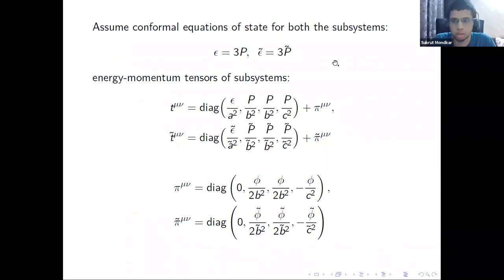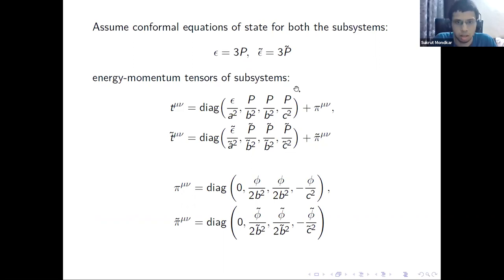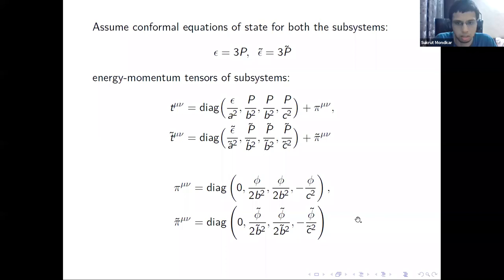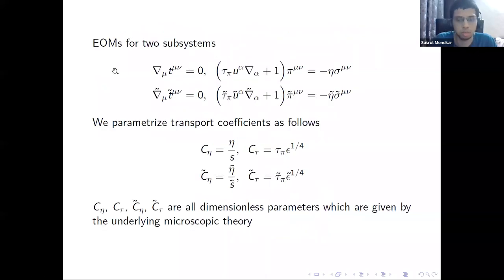We work with the conformal equations of state for both subsystems. The energy-momentum tensor of each subsystem consists of a perfect fluid part plus pi^{mu nu} containing viscous corrections, again given by just one independent component in each case. We have the usual conservation equations and MIS equations — one set for each subsector.